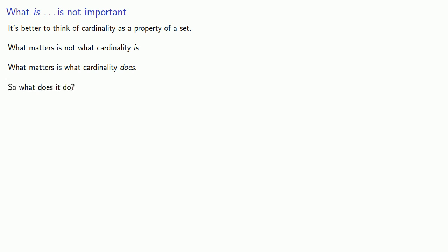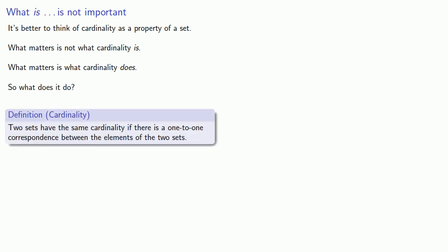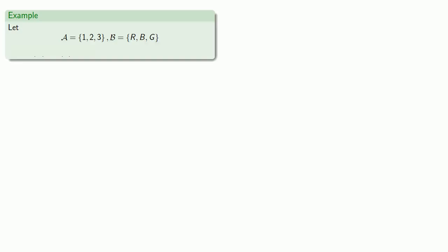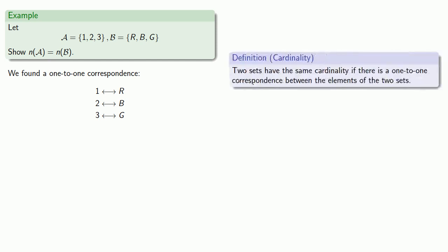So what does it do? We define two sets to have the same cardinality if there is a one-to-one correspondence between the elements of the two sets. If that happens, we write: cardinality of A equals the cardinality of B. For example, with these two sets, we'll show that the cardinality of A equals the cardinality of B — and remember, we already found a one-to-one correspondence. Definitions are the whole of mathematics, all else is commentary. If there is a one-to-one correspondence between the two sets, then the two sets have the same cardinality.